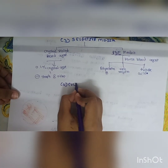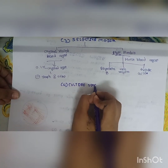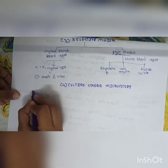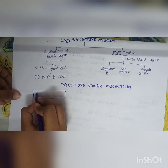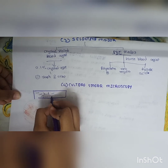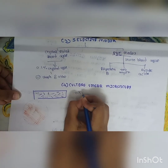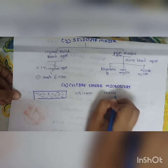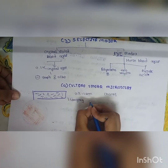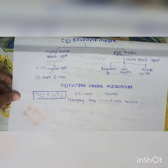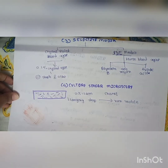The fifth method is culture smear microscopy. Microscopically, we will see chains of gram-positive cocci, 0.5 to 1 micrometer in size. The hanging drop method will confirm that they are non-motile, which is consistent with S. pyogenes.